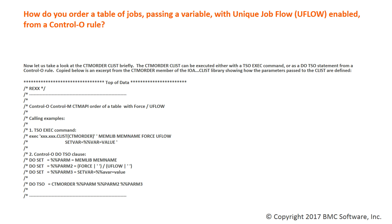So let's take a look at the CTM Order CLIST briefly. The CTM Order CLIST can be executed either with a TSO Exec command or as a Do TSO statement from a Control-O rule. Shown below is an excerpt from the CTM Order member of the IOA CLIST library, showing how the parameters passed to the CLIST are defined, along with the TSO Exec command and the statements coming from a Control-O Do TSO action.